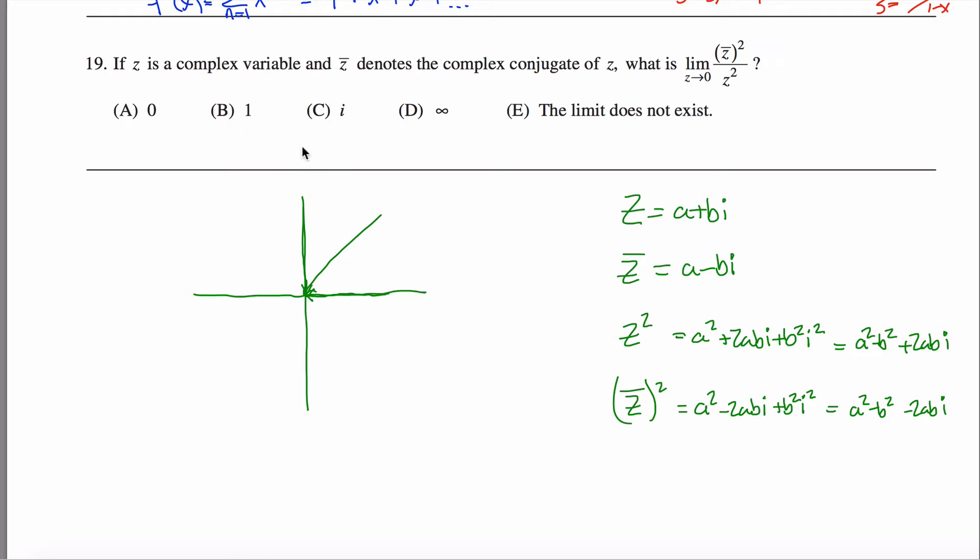The way I would solve this problem, or the way I did solve this problem, is considering a couple of cases. So maybe first, let's think about if z is real. So if z is a real number, then b equals 0 in these cases.